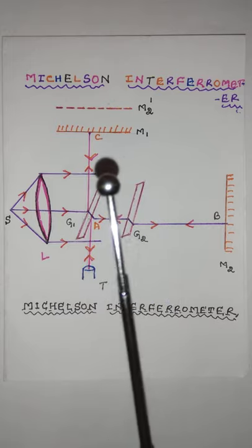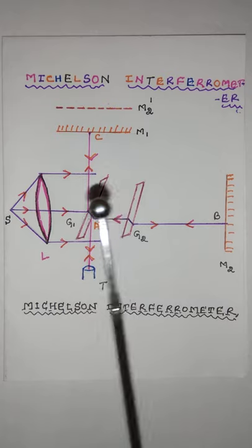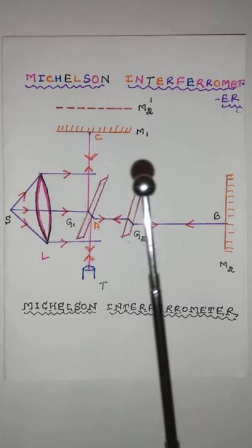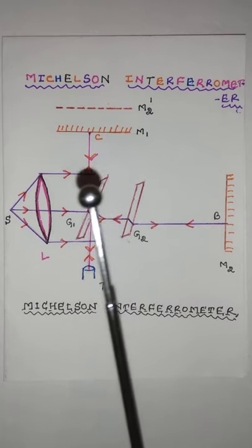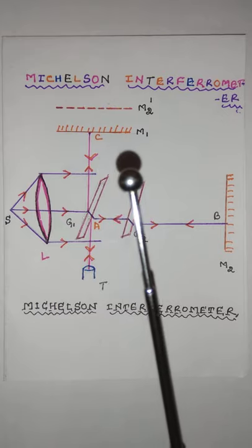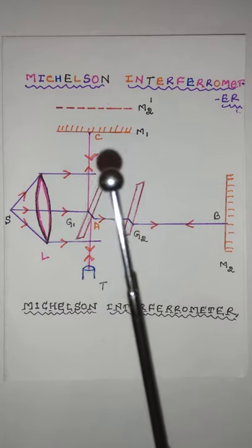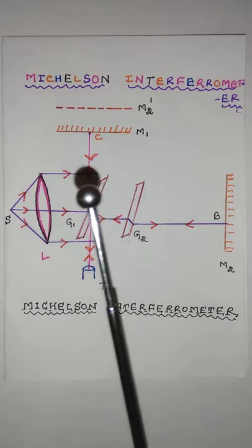That means, whenever they are perpendicular, it produces circular fringes. When they are not perpendicular, then a wedge-shaped film will be formed which produces straight fringes that are being formed in the vicinity.